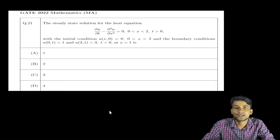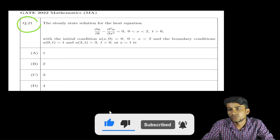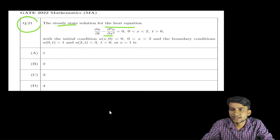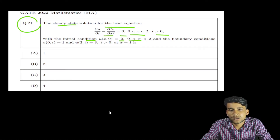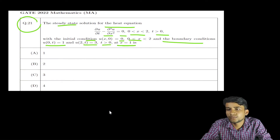Hello everyone, welcome back to my channel 'Maths is My Tips'. Today we are solving GATE 2022 mathematics, question number 21, from partial differential equations. The question asks for the steady state solution of the heat equation: ∂u/∂t − ∂²u/∂x² = 0, for 0 < x < 2, t > 0, with initial condition u(x,0) = 0, and boundary conditions u(0,t) = 1 and u(2,t) = 3 for t > 0.